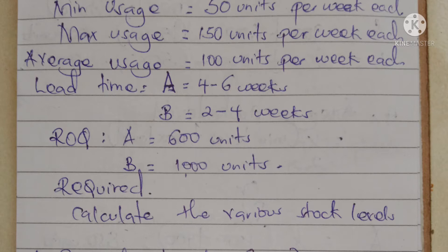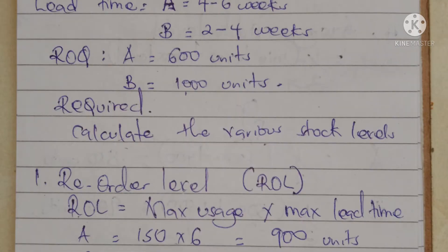We are required to calculate the various stock levels. There are four main stock levels: the reorder level, the minimum stock level, the maximum stock level, and the average stock level. We are going to calculate them one by one, starting with the reorder level.